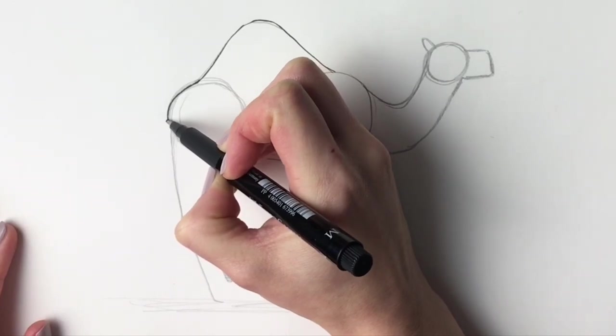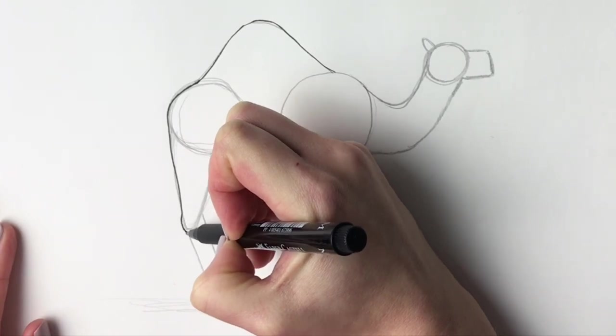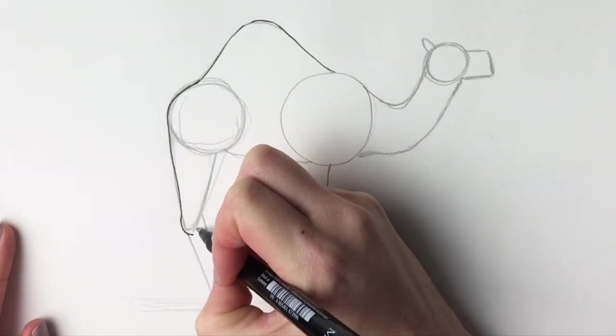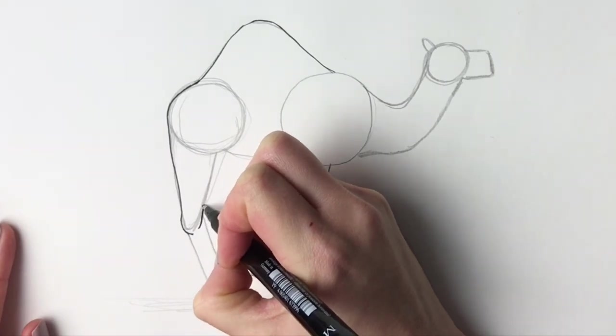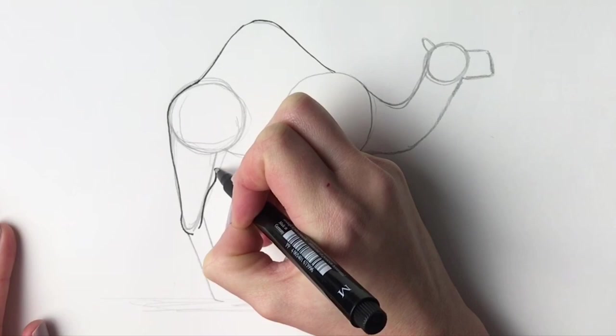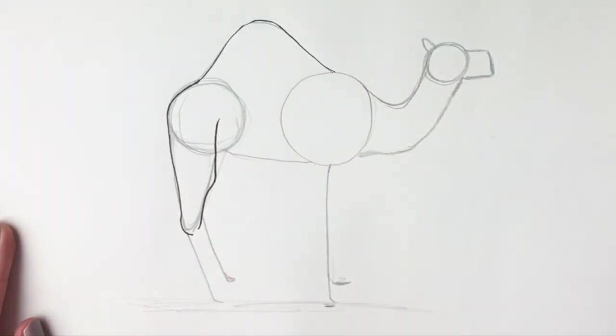Following it round here. And then I'll follow the leg round. And then just draw the joint there. Then I'm going to come up the other side. I've got quite a few joints in their legs. This is a dromedary camel, which only has one hump.